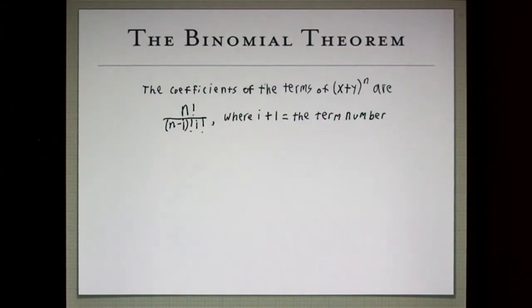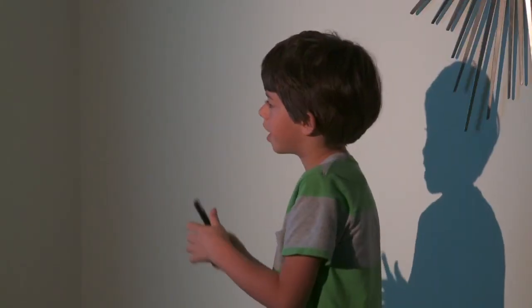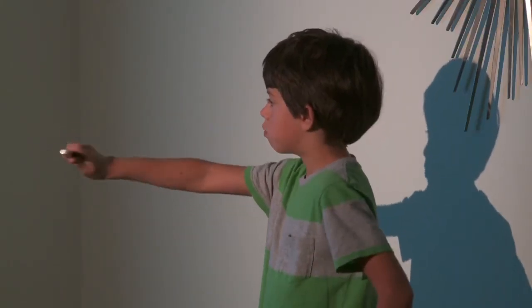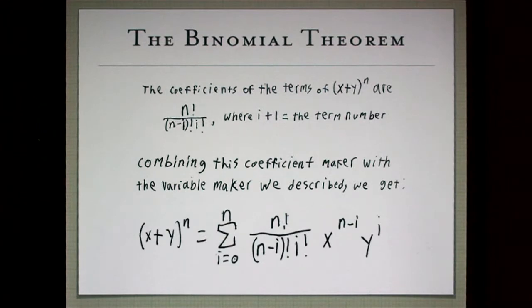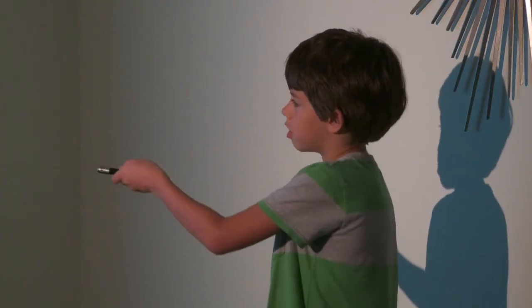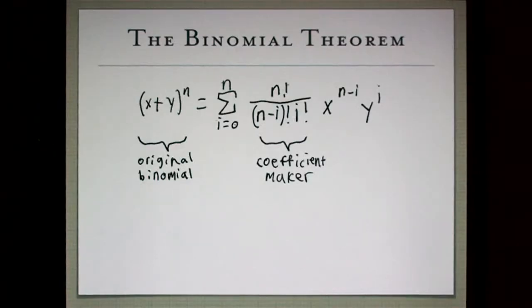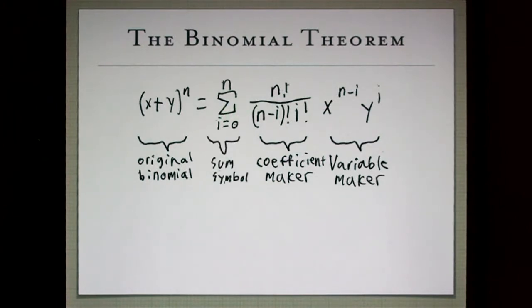Since we know the coefficients of the terms of x plus y to the n, n factorial over n minus i factorial, i factorial. When we combine that coefficient maker with the variable maker we described, we get x plus y to the n equals the sum of i equals 0 to n of n factorial over n minus i factorial, i factorial, x to the n minus i, y to the i. Okay, so that's our original binomial, then that's our coefficient maker, that's our variable maker, and that's the sum symbol.